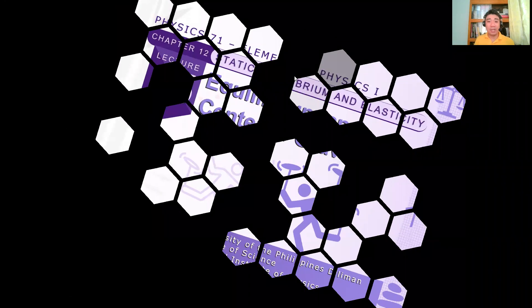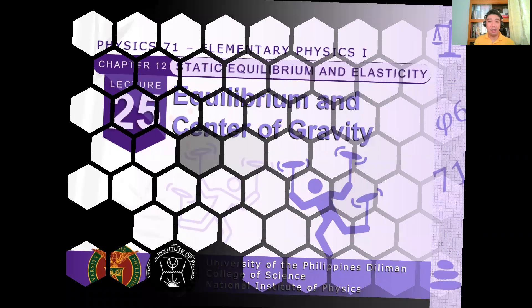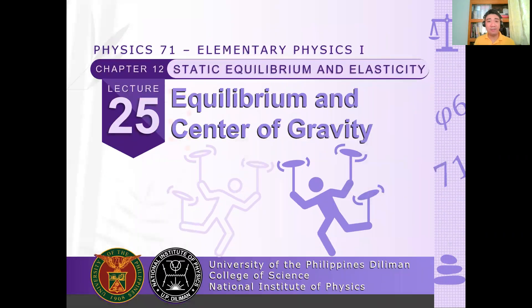To summarize this lecture, we have enumerated the conditions for static equilibrium: net sum of force is zero, net sum of torque is zero, and there should be no velocities. That's all you need to know to say that an object is in static equilibrium. And then after that, we have solved problems in static equilibrium.